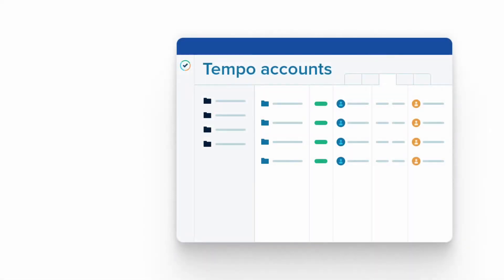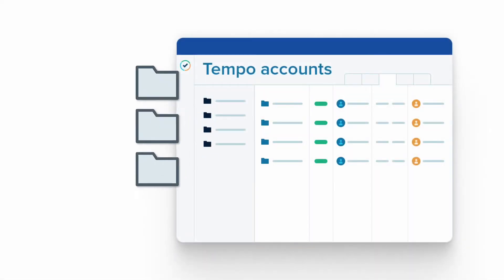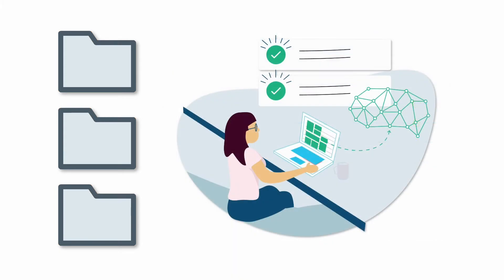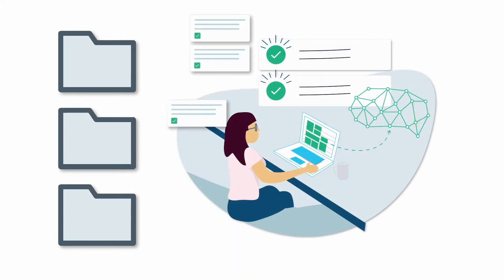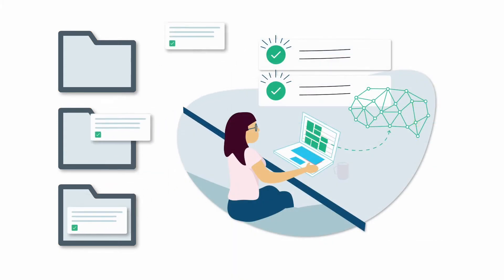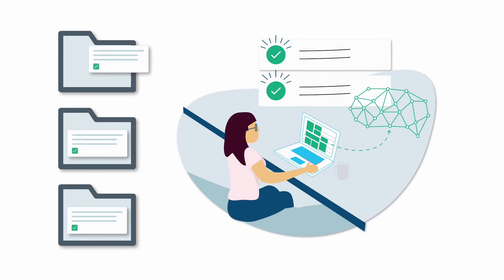Tempo Accounts are like a high-level organizer for categorizing all the time that is logged by your employees using Tempo Timesheets. They offer a convenient way to capture and report on time logged on work done in multiple Jira projects across the teams in your organization.